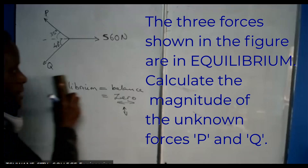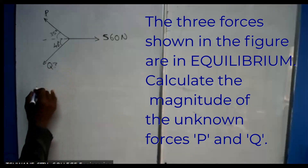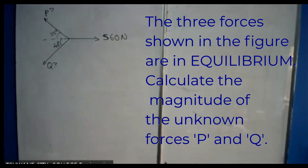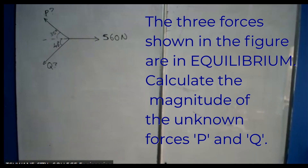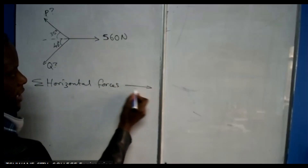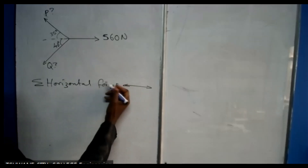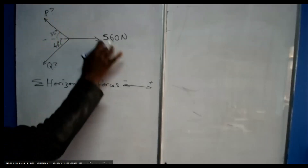The question asks us to calculate the magnitude of the unknown forces P and Q. To do this, we calculate the sum of the horizontal forces. Horizontal forces go either to the right or to the left — going left carries a negative sign, going right carries a positive sign. We look at all three forces and when we add them they should give us zero.